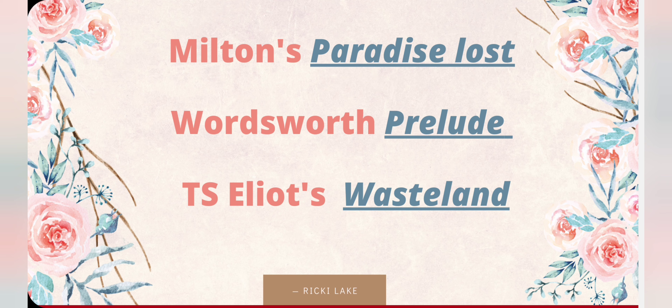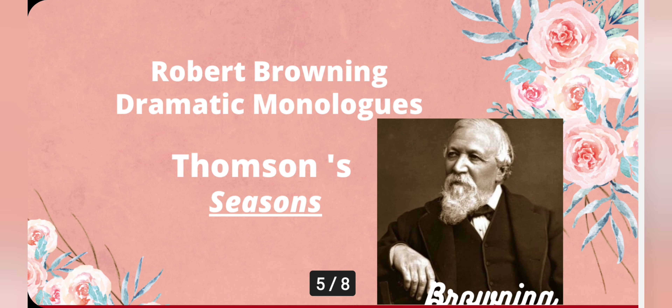Blank verse has been used by later writers for poetry also. Milton's epic poem Paradise Lost is in blank verse. Wordsworth's autobiographical Prelude, and T.S. Eliot's The Waste Land, are also in the same metre. Browning used it for his dramatic monologues and Thomson for his poem The Seasons.